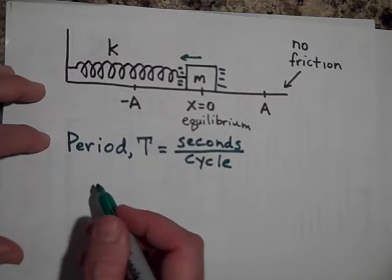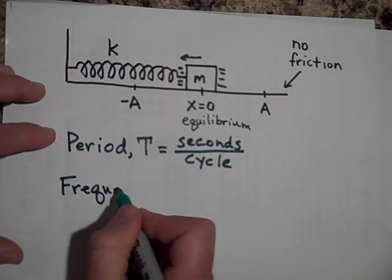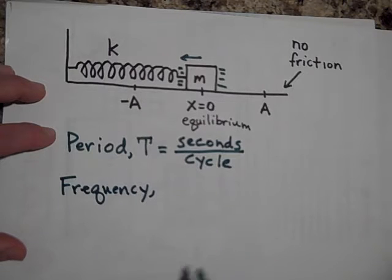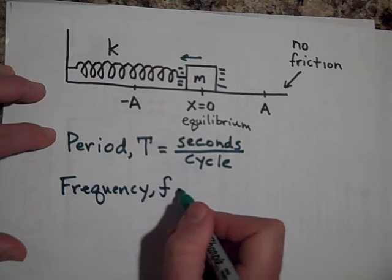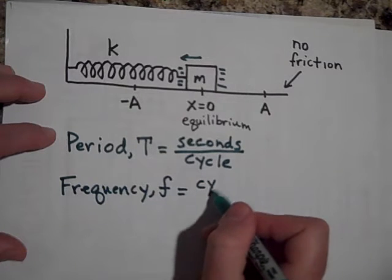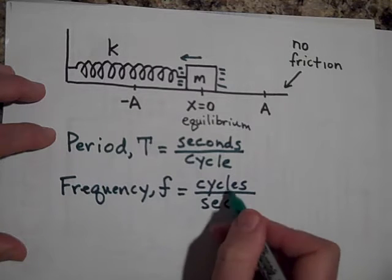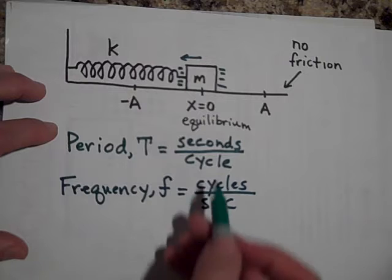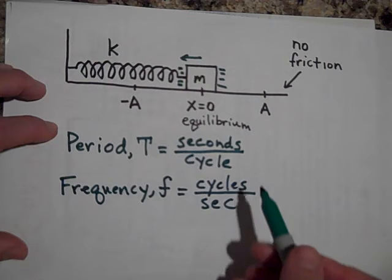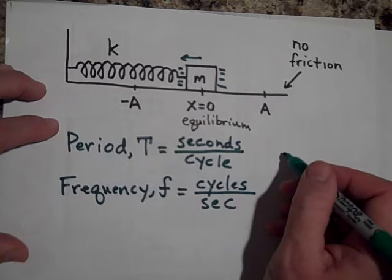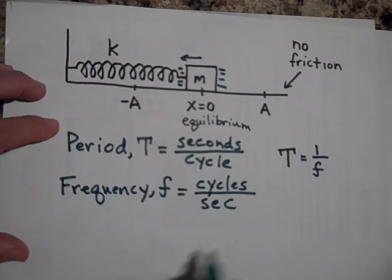We sometimes also talk about frequency. Frequency is designated with a lowercase f, and we're going to define that as how many cycles you make in one second. So it's cycles per second. Now if you look at these two, it's pretty easy to see that if this one's seconds per cycle and that's cycles per second, that indeed the period is equal to the reciprocal of the frequency or vice versa.